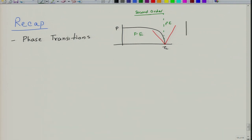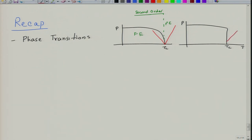If you look at the first order, it shows a different behavior. In the first order, when you plot P versus T, the polarization suddenly drops to zero at Tc. This is an abrupt change in polarization, and the susceptibility change is manifested in a corresponding fashion.